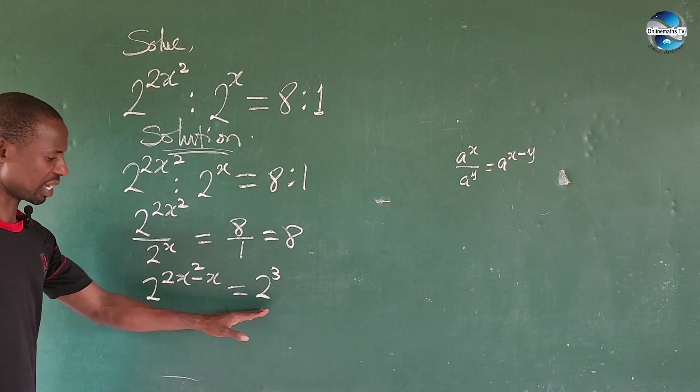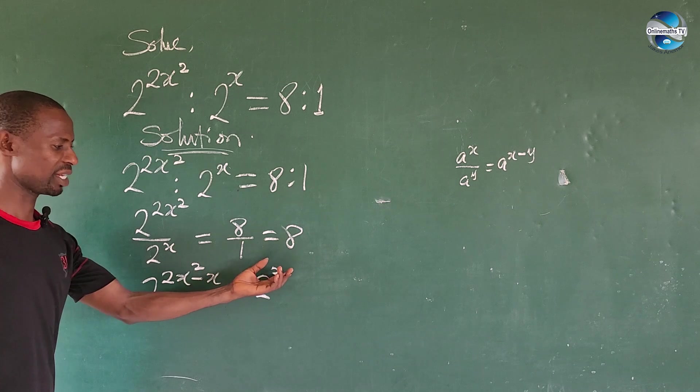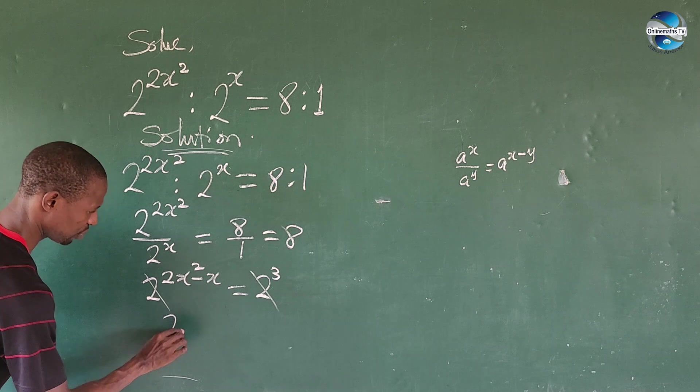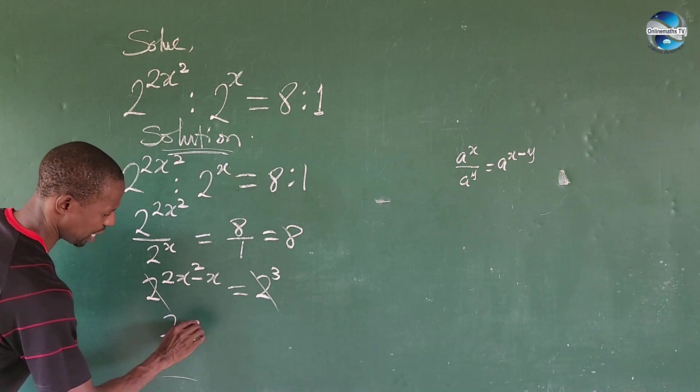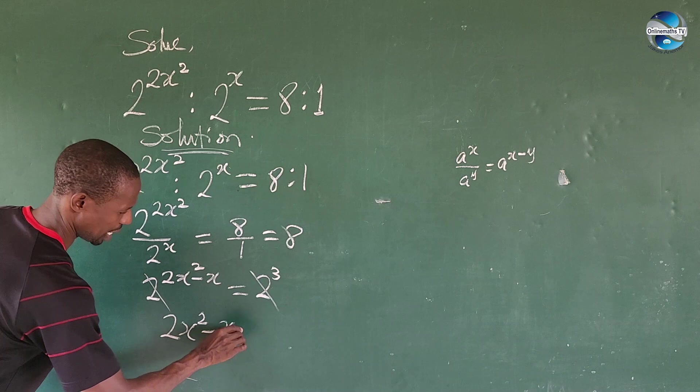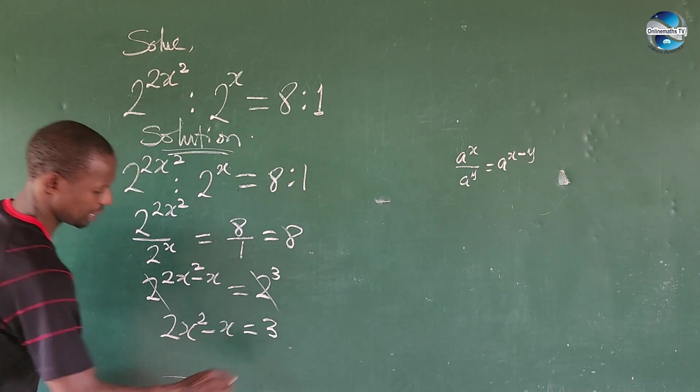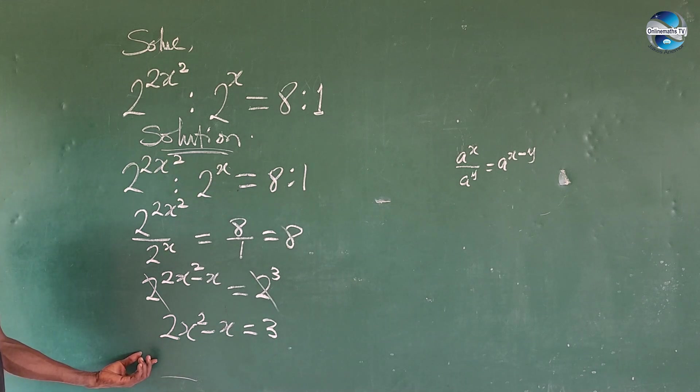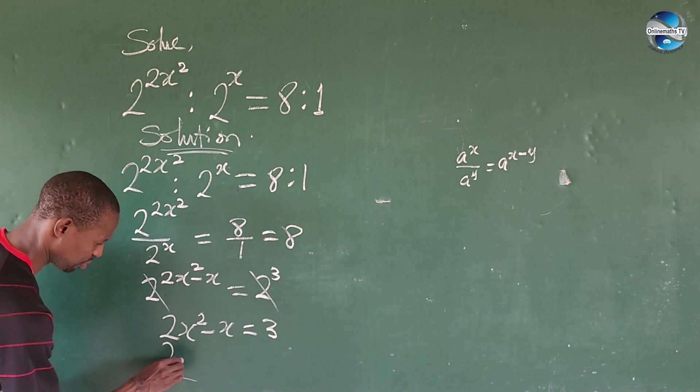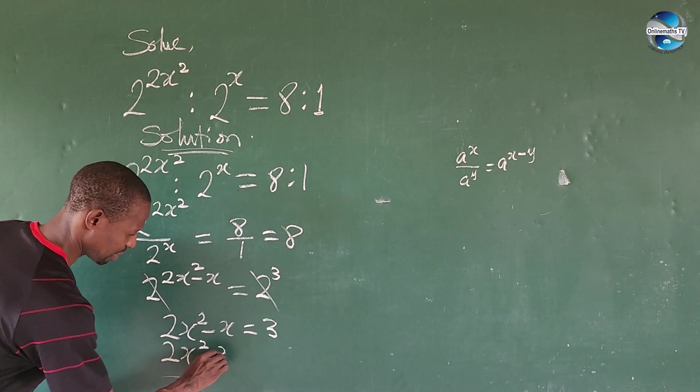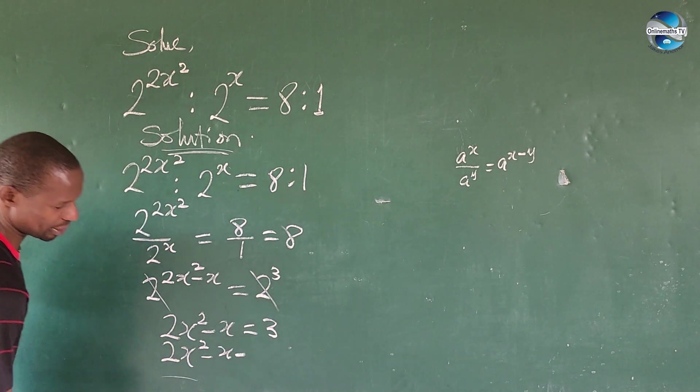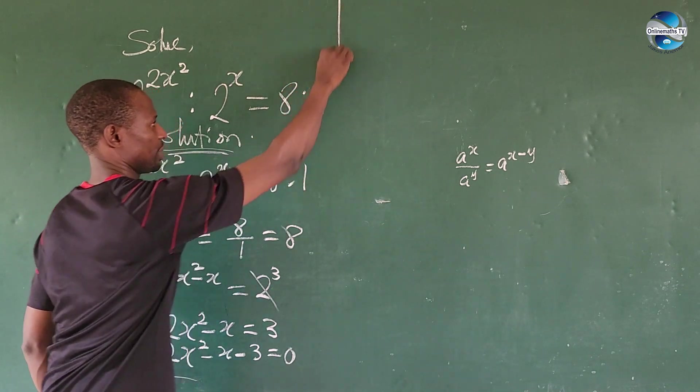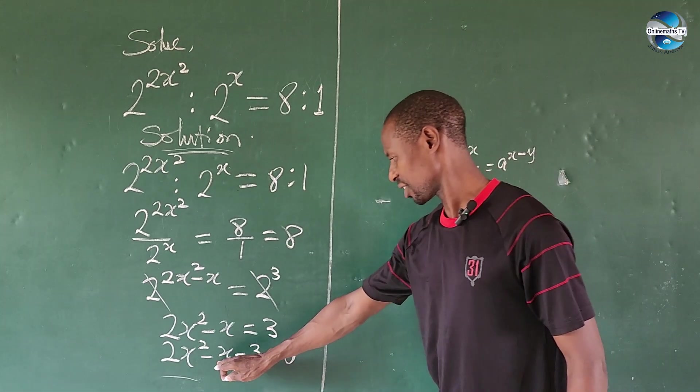The bases are the same, so we can equate the exponents. This gives us 2x² - x = 3. Moving everything to the left side gives us 2x² - x - 3 = 0.